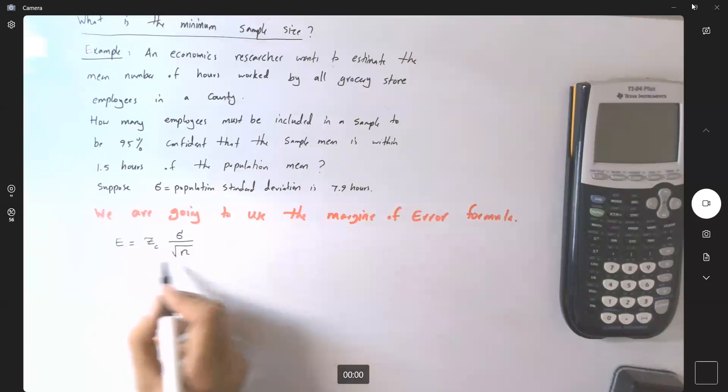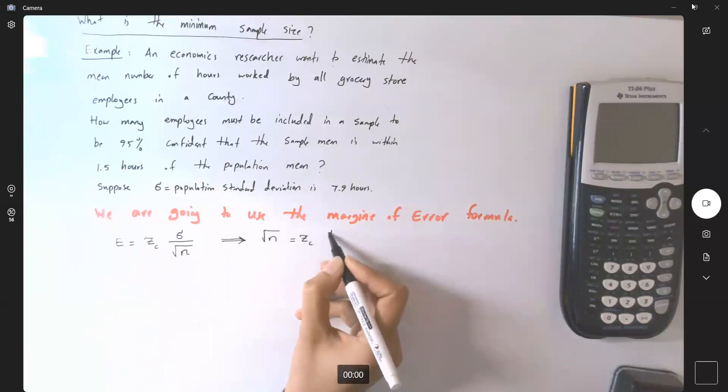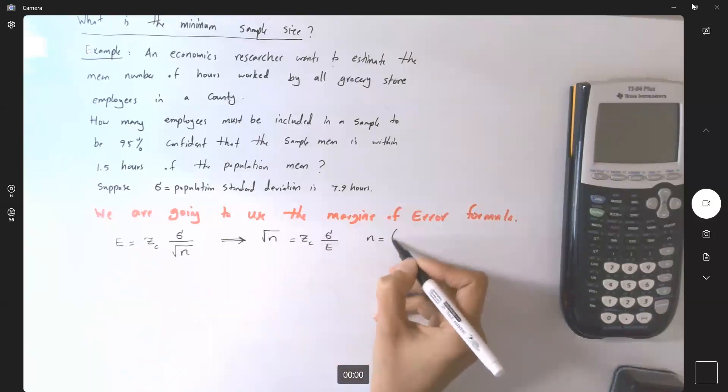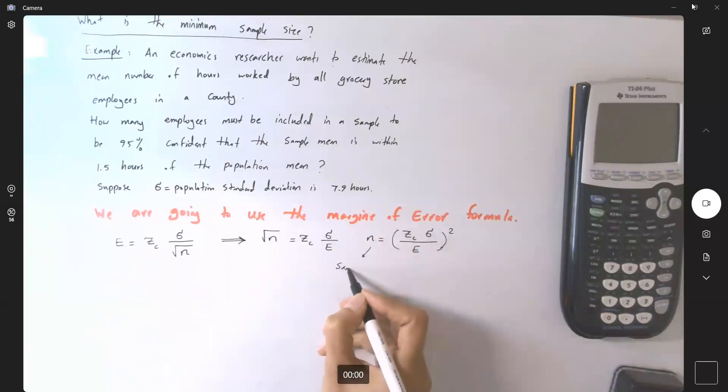I can rewrite this formula. This formula can be written as square root of n equals to zc sigma over e, or n can be written as zc times sigma divided by margin of error to the second power. n is going to be the sample size.